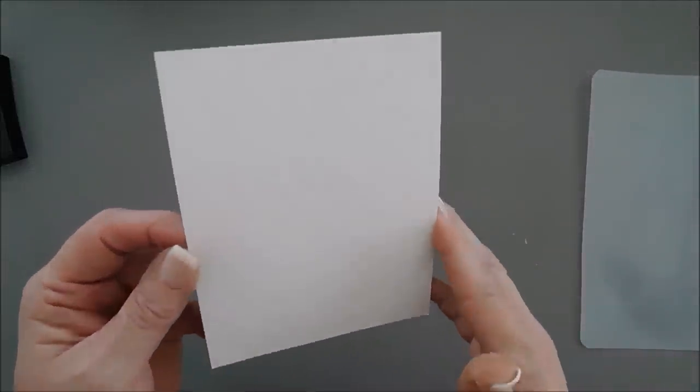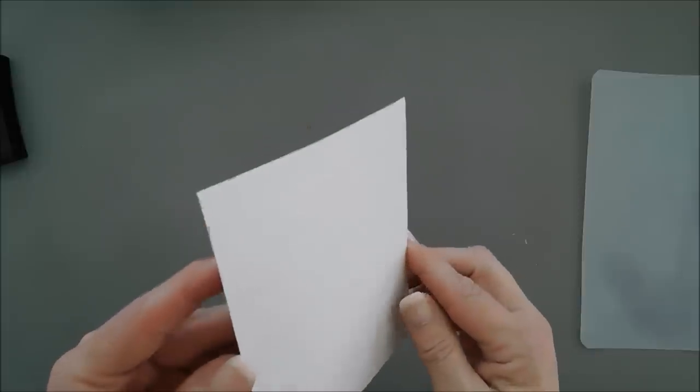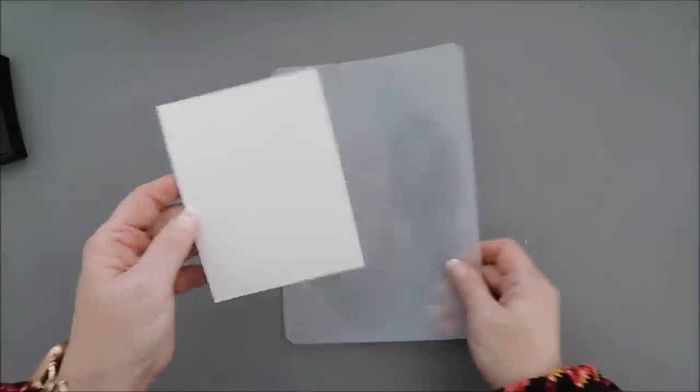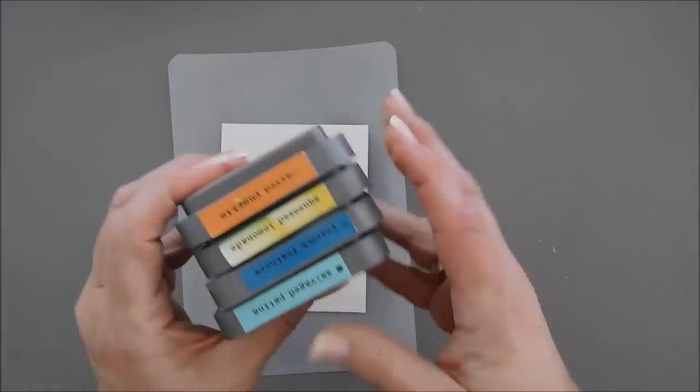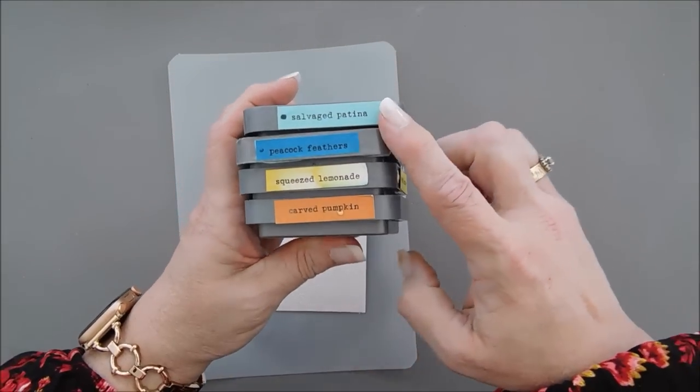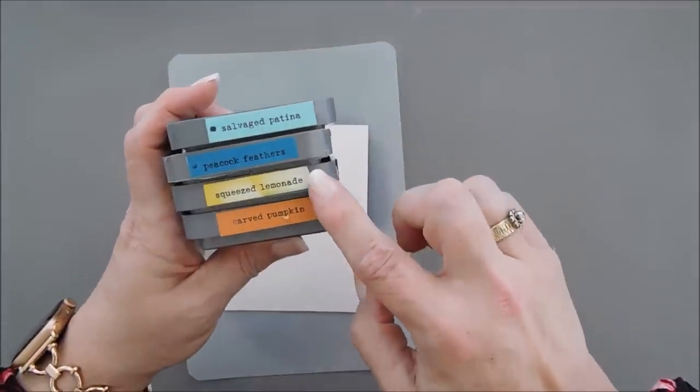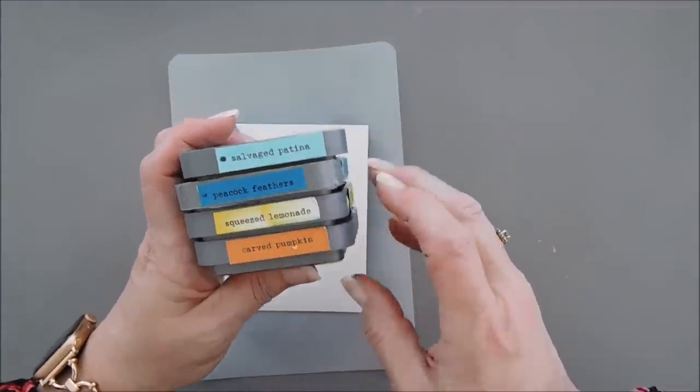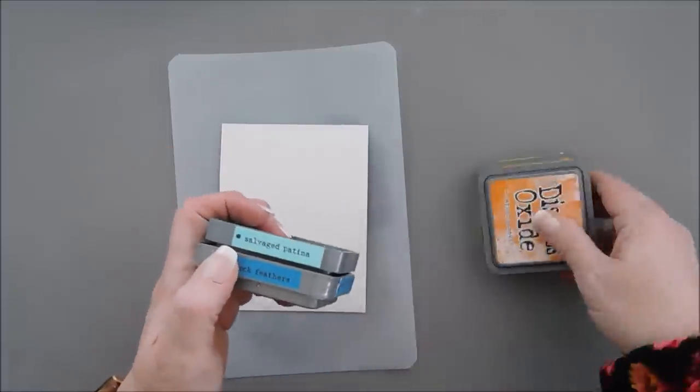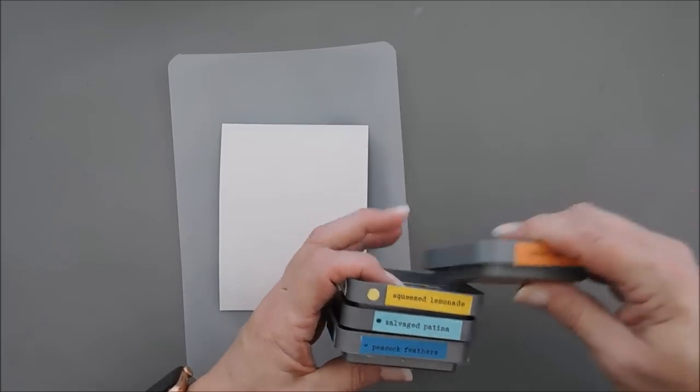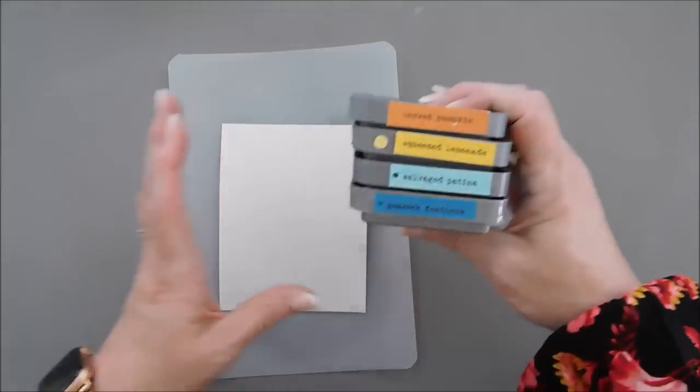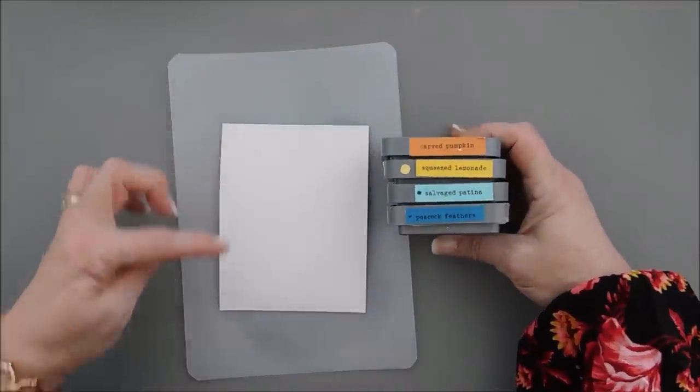My background panel is now embossed with white embossing powder. I'm going to bring in my craft mat here and we're going to do a little bit of ink blending. I have four different colors of ink: salvaged patina, peacock feathers, squeezed lemonade, and carved pumpkin. And I'm trying to go in order. And I think this is the order that I want to ink blend.